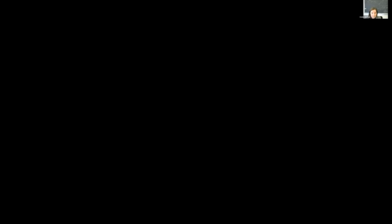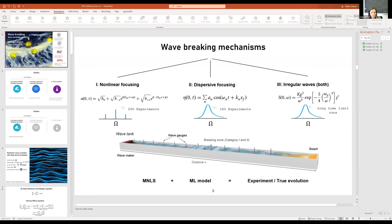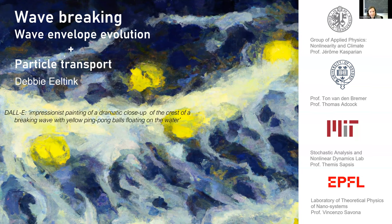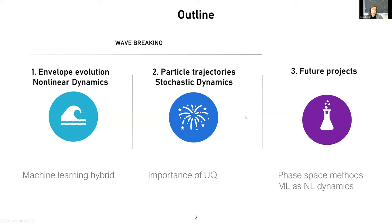Thanks so much for having me. It's really nice to be able to give the talk here. The topic today is wave breaking. I'll discuss two projects: one on wave envelope evolution with breaking, and the other on particle transport. I'll be using some machine learning techniques. I thought it would be fun to have as an opening picture a wave generated by AI text-to-image. This was an impressionist painting of a dramatic closeup of the crest of a breaking wave with yellow ping pong balls floating on the water. I think it turned out pretty well after a few failed tries.